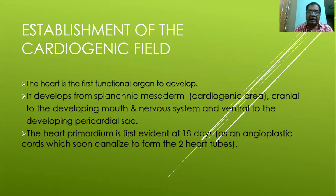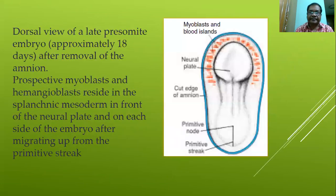The heart primordium is first evident at 18 days as an angioblastic cord, which will canalize to form two heart tubes. This is the dorsal view of the pre-somite embryo, approximately 18 days, after removal of the amniotic sac.